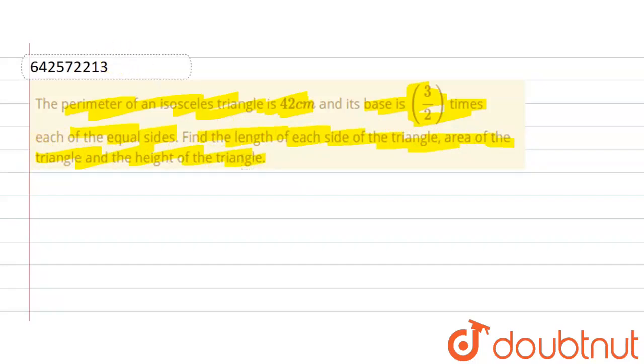Now let us draw the triangle. So this is our triangle A, B, C, and this is the side length A and this is the side length A. Now, its base is 3 by 2 times the side of equal sides, so it becomes 3 by 2 A.